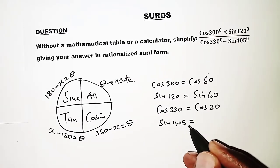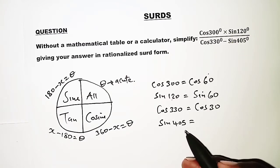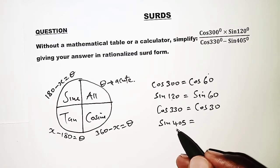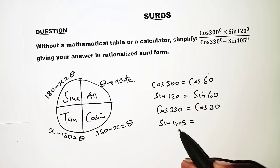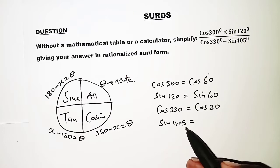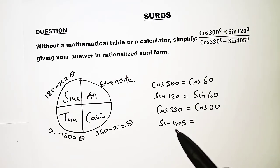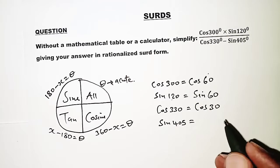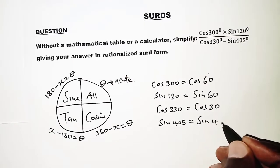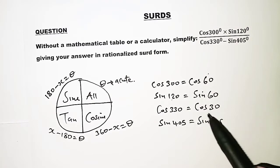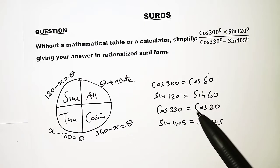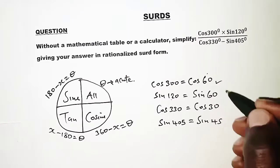Finally, for sine of 405 — since 405 is greater than 360, we subtract 360 continuously until we get an angle between 0 and 360. So 405 minus 360 gives us 45. Since 45 is already an acute angle in the first quadrant where all ratios are positive, the sine there is positive — so we have sine of 45.